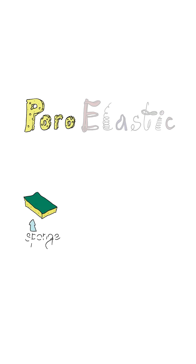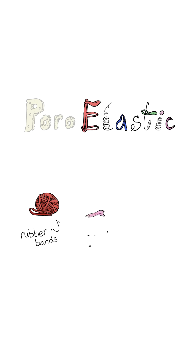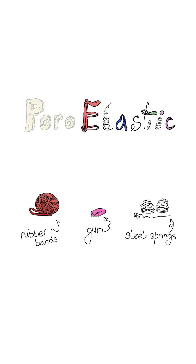The first part of the word is 'poro.' Poro just means pores. Poroelastic materials are full of pores or holes. The second part of the word, 'elastic,' refers to elastic materials — materials that store the energy you put into them and then can give that energy back later.